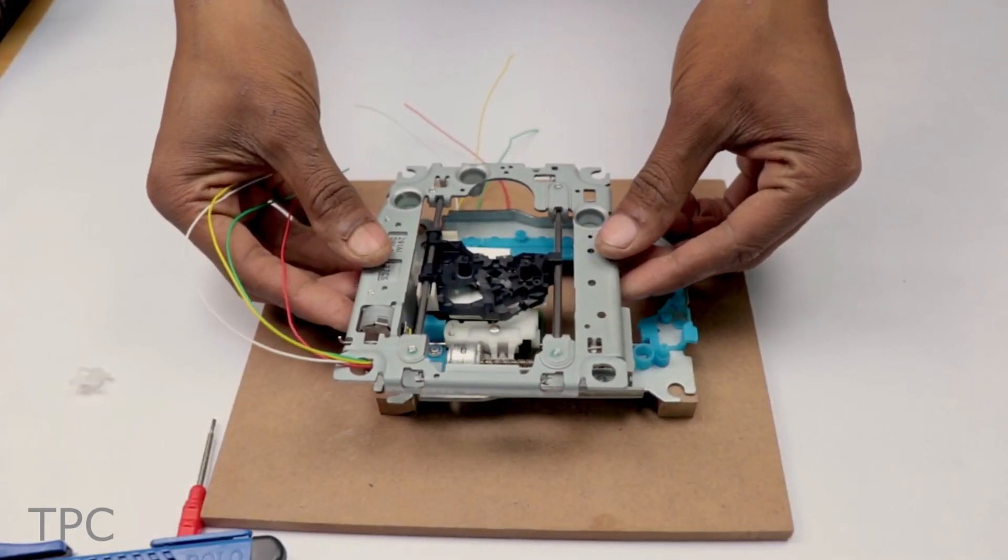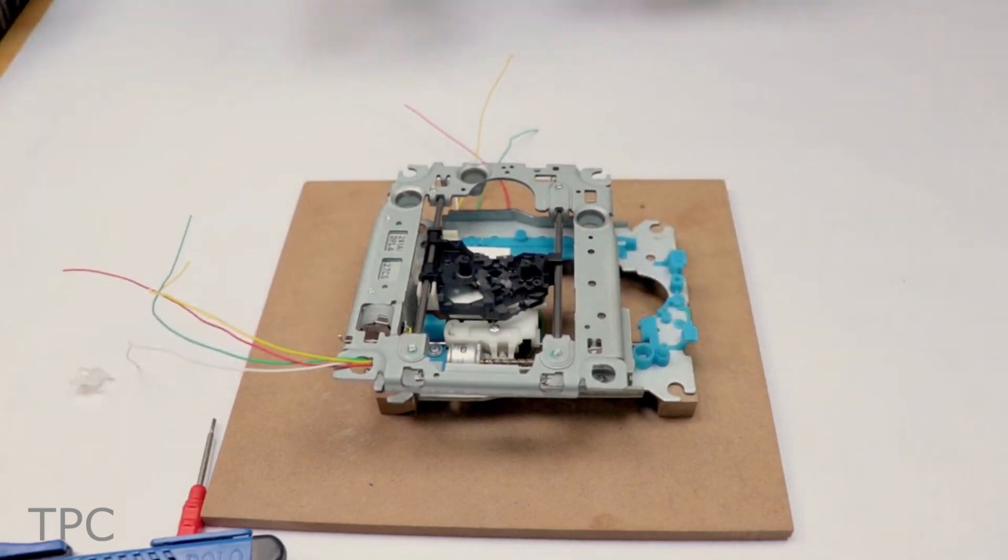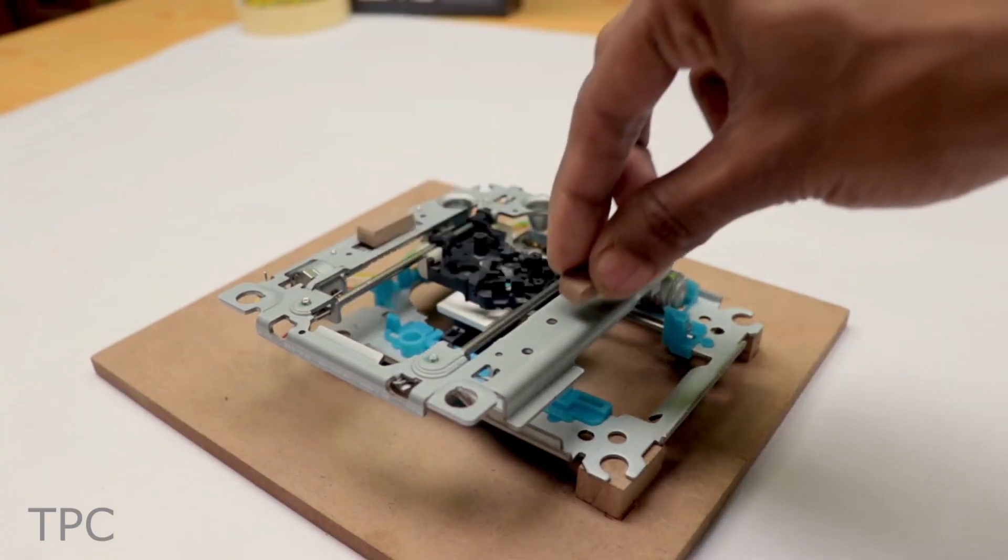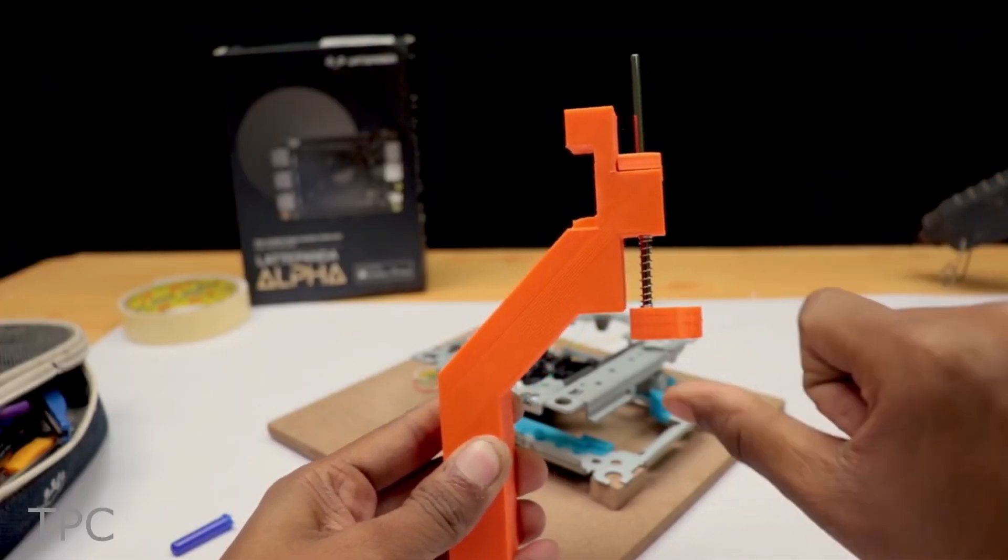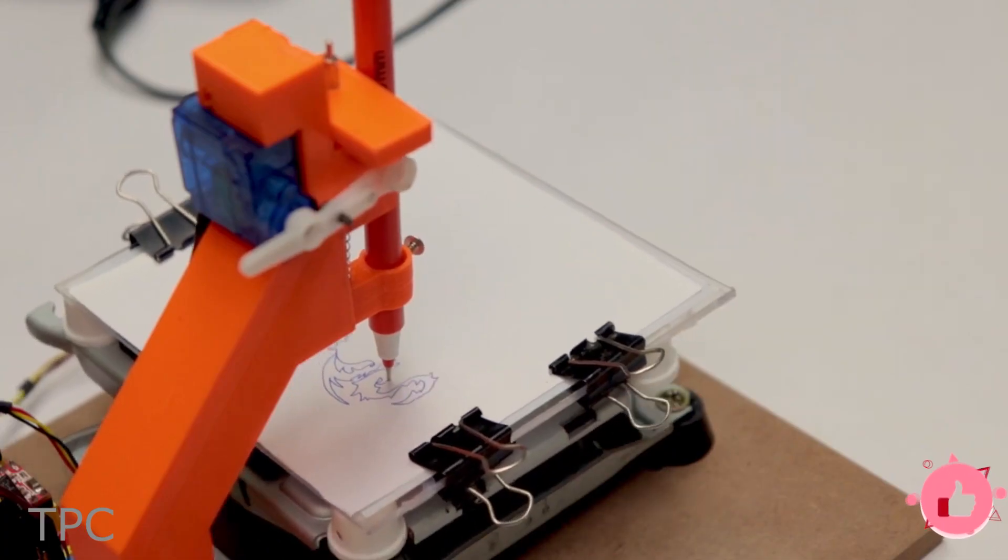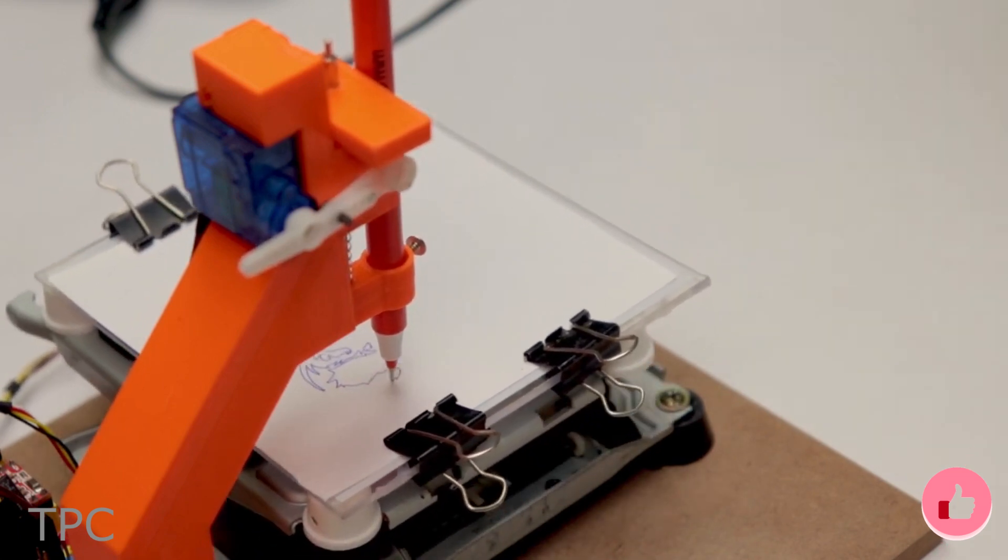The slider of the X and Y-axis are placed perpendicular to each other. A cut wood piece is placed above it that acts as the working bed. The pen holding mechanism is made using 3D printed parts. A servo and spring system work together to lift the pen on the Z axis.